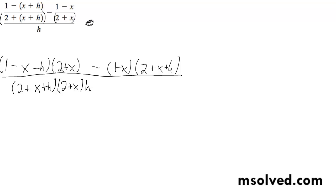Now, the top portion of what this comes down to is 2 minus 2x minus 2h plus x minus x squared minus xh, minus 2 minus x minus h plus 2x plus x squared plus xh.